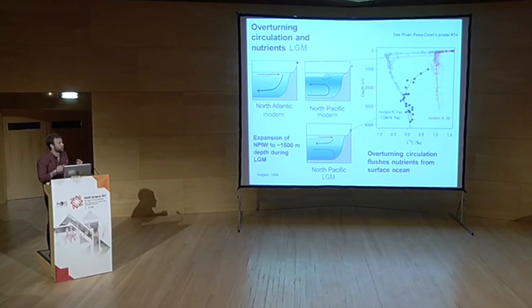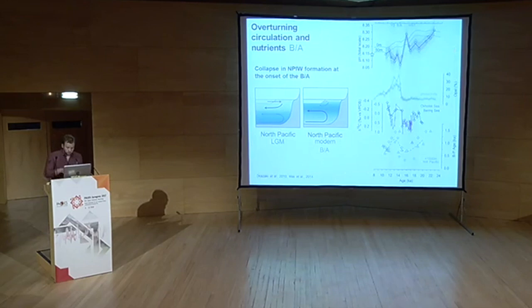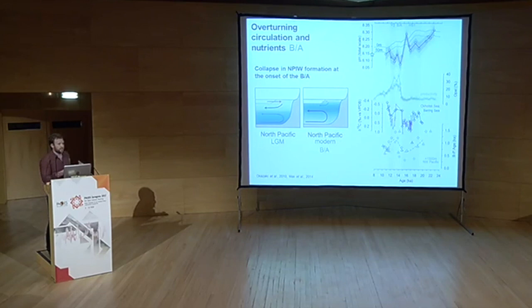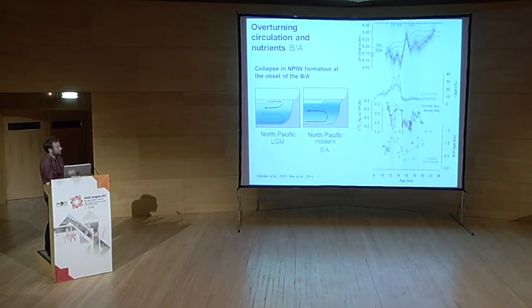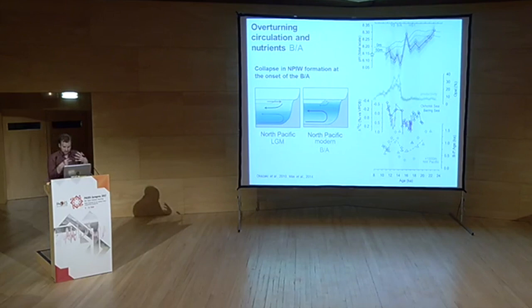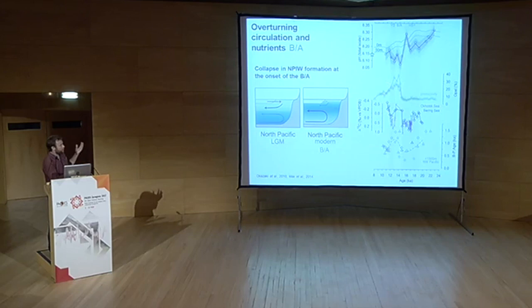During the deglaciation at the onset of the Bølling-Allerød productivity maximum, we see a switch from the glacial well-ventilated circulation mode to the modern poorly-ventilated mode — evident in the shift from heavy to light carbon isotopes and from young to old radiocarbon. But if the circulation was basically like today, why was productivity much higher and pH much lower than modern, implying greater nutrient supply with essentially the same circulation?